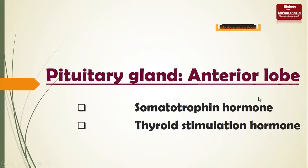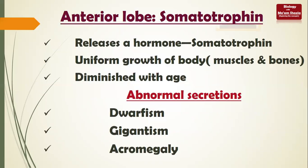The message comes from the pituitary gland, specifically from the anterior lobe. The posterior lobe will be discussed in the next lecture. In our book, only two secretions of the anterior lobe are concerned: one is somatotrophin and the other is thyroid-stimulating hormone. Now I am discussing somatotrophin.